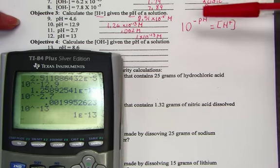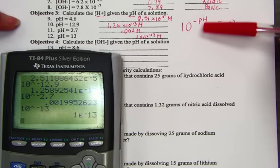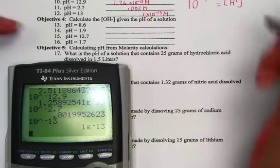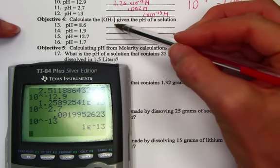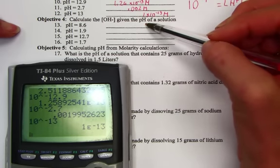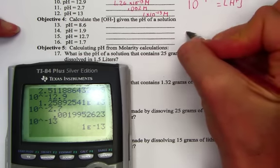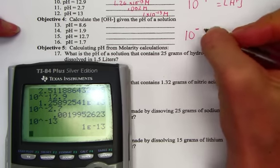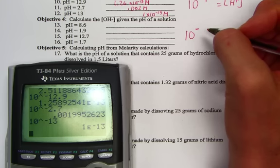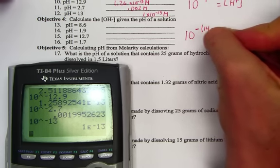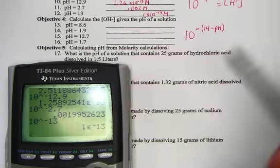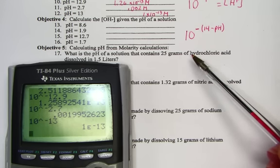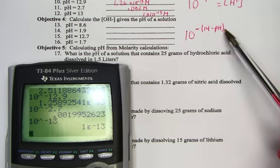So in our third objective, we're simply hitting 10 raised to the negative pH units. If we're given hydroxide ion as the target and I have a pH of a solution, what I would do is raise my power of 10, and knowing that we have to take for hydroxide, 14 minus the pH.